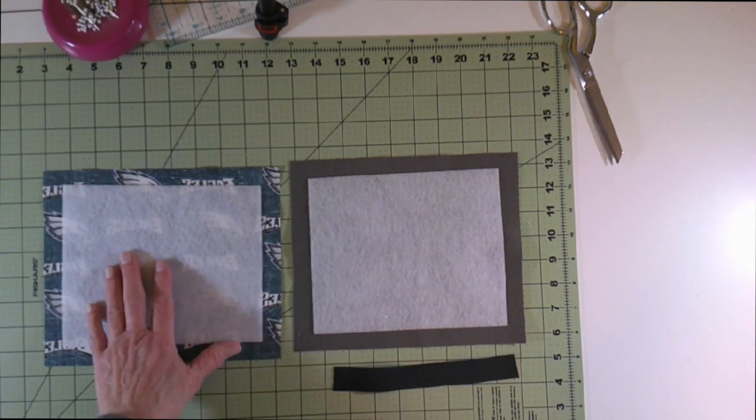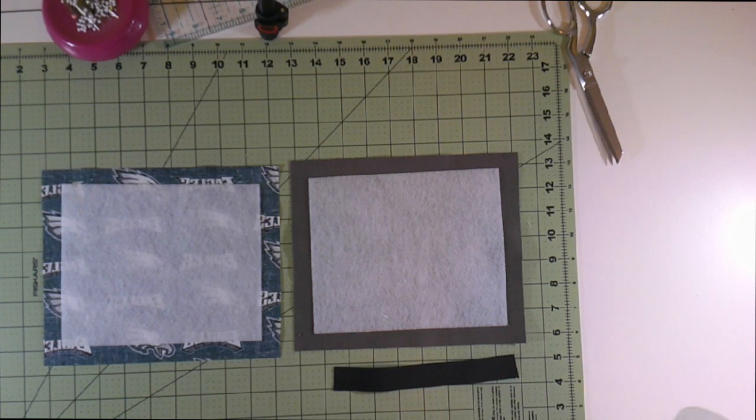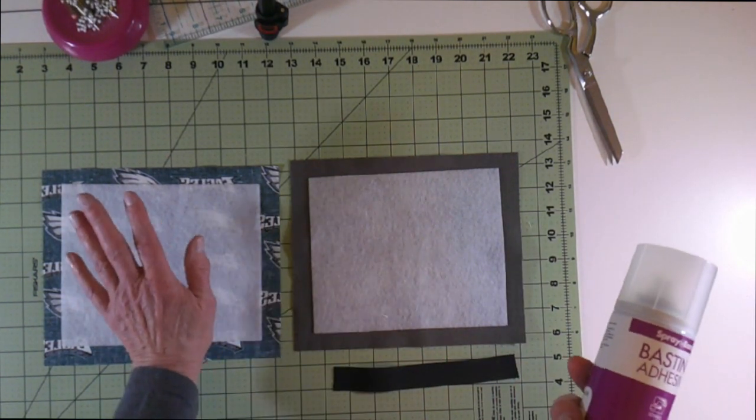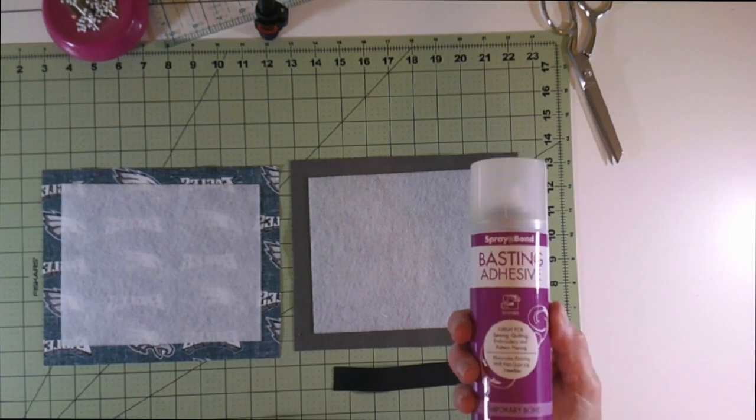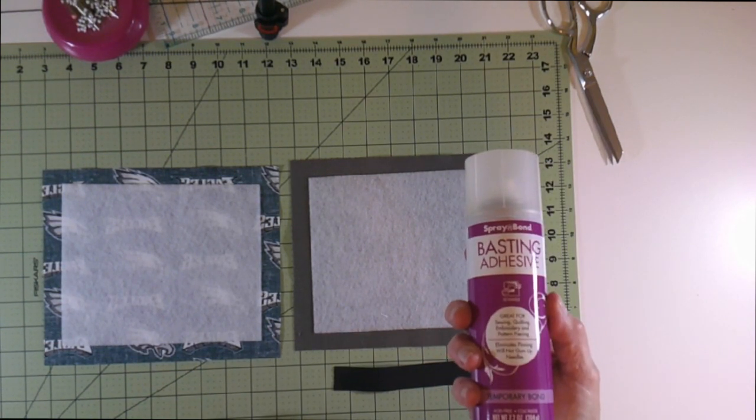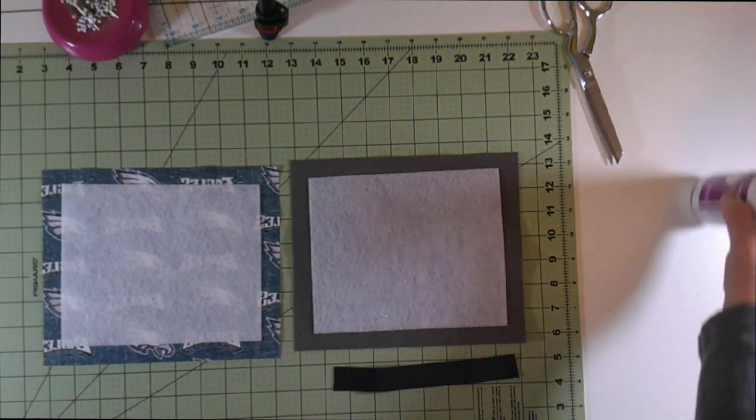Now instead of fusible fleece, I often use just a remnant of regular polyester fleece and then cut it to 6½ by 8 and then use this temporary bond basting adhesive to fix it to the wrong side of my fabric. That works just as well.